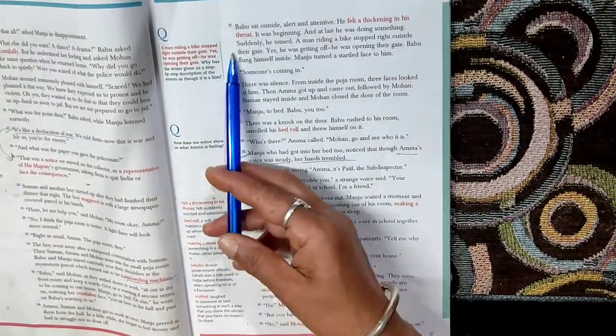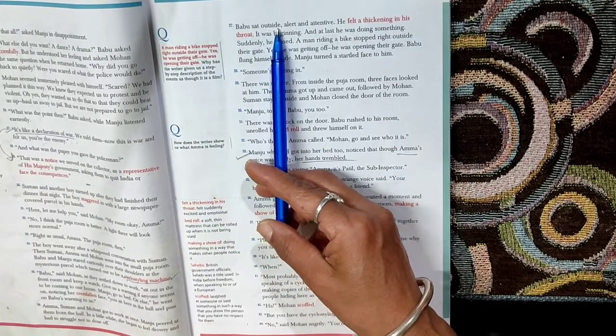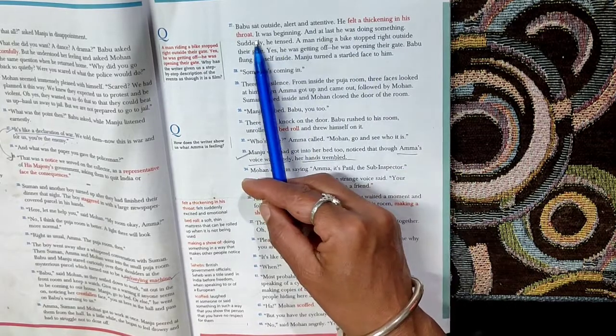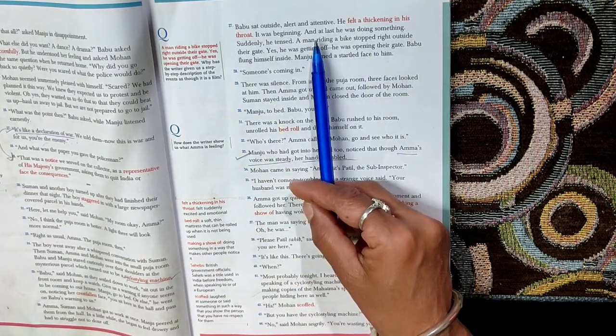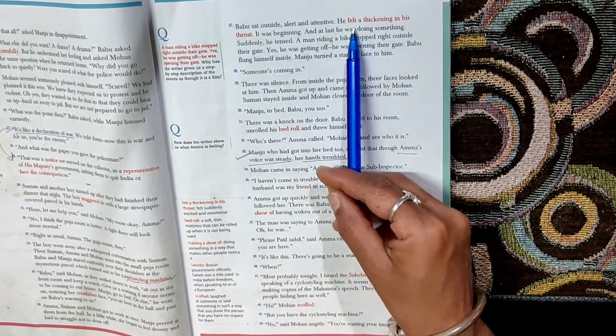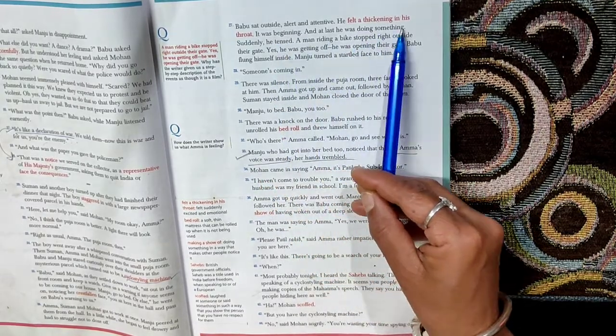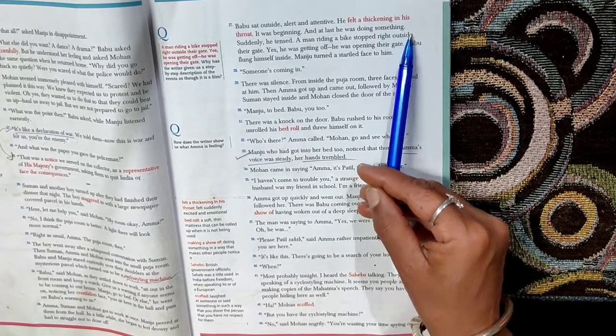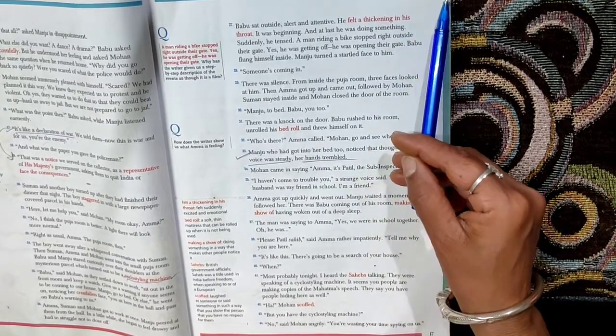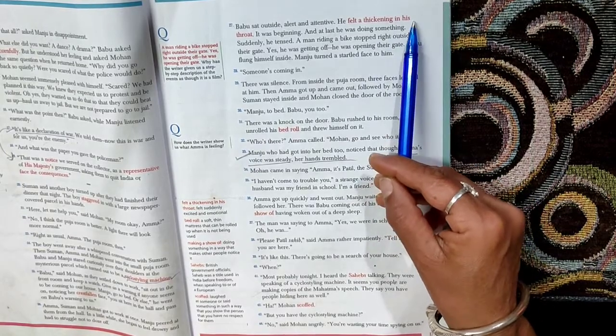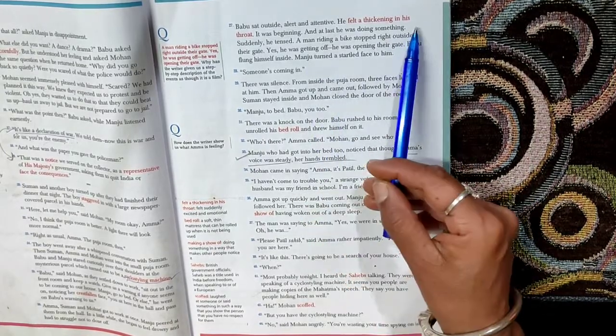Paragraph 27. Babu sat outside, alert and attentive. He felt a thickening in his throat. Underline thickening in his throat. He felt suddenly emotional and excited. It was beginning, and at last he was doing something. So he is excited because he has got a responsibility. He has got a task and he wants to be sincere in performing his task that Mohan had given him.